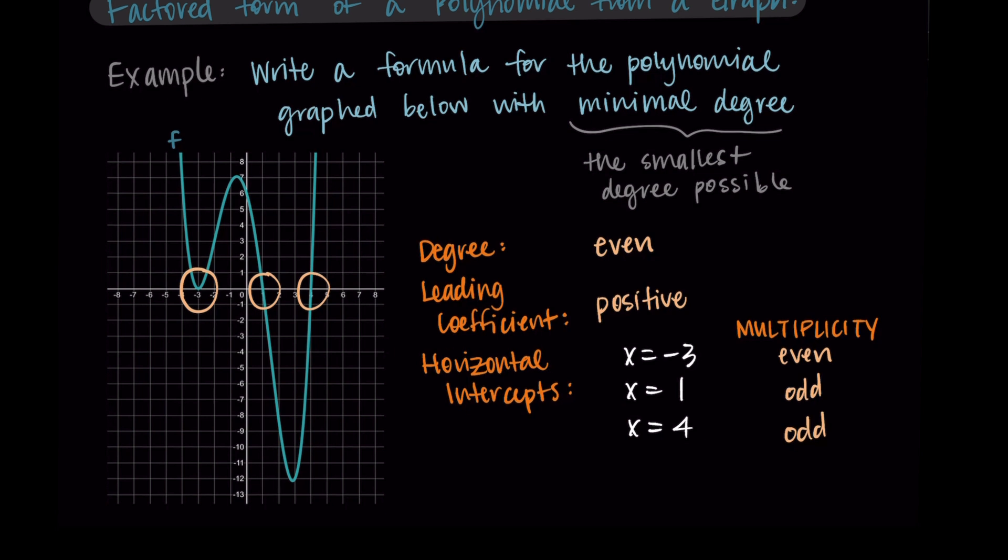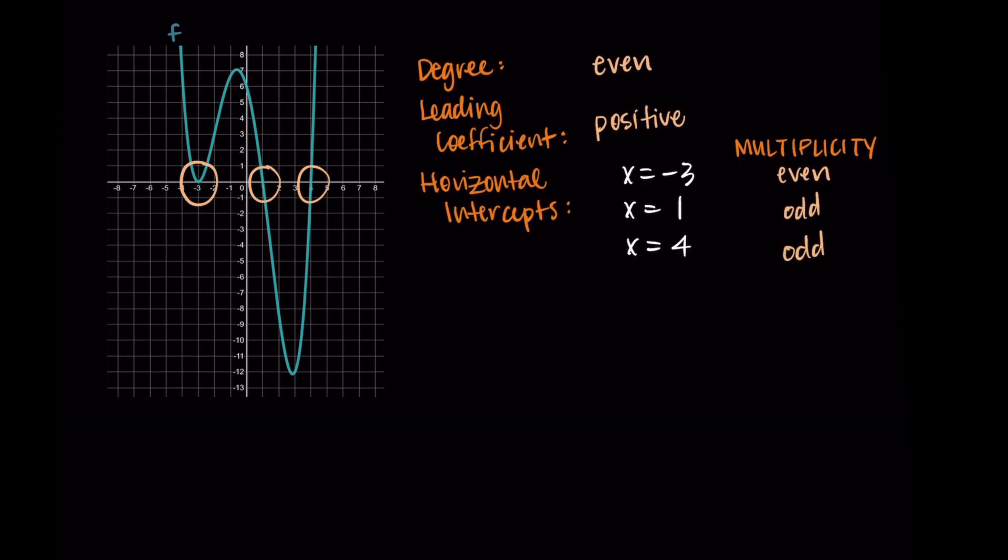Now that we have our intercepts and the multiplicities, we can help put this together in a potential equation. We're going to have f of x equals a, where a is our leading coefficient, and then we'll put our factors with the horizontal intercepts. I do x minus negative three, and I'm going to put a squared on that since it's even multiplicity. Then this is multiplied by x minus one and then x minus four.